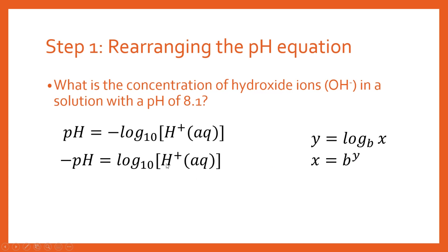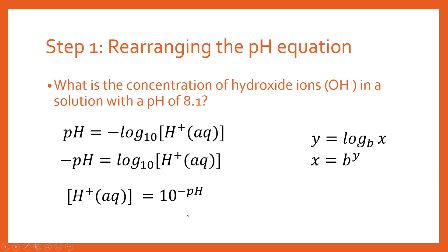We can do exactly the same thing for this expression. Our hydrogen ion concentration is like our x, so we get that rearranged by saying that the hydrogen ion concentration is going to be 10 to the power of minus pH. We've now got an expression for the hydrogen ion concentration.